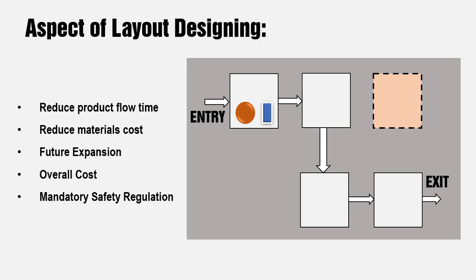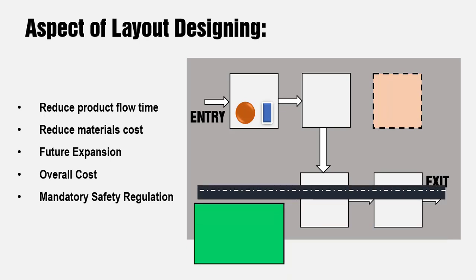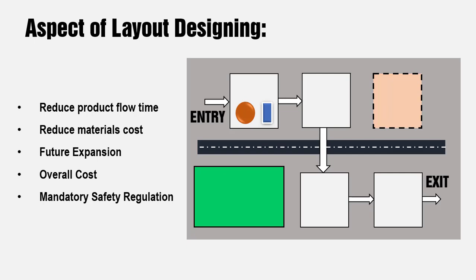The overall cost is reduced when you plan all these things together. And mandatory safety regulations such as roads and green zones — where plants and ecosystems must be maintained according to local regulations of states and countries. These are some of the aspects on which the layout is actually designed.